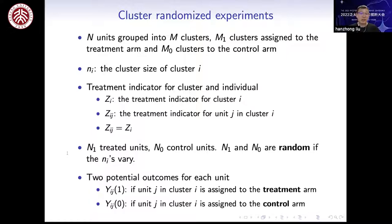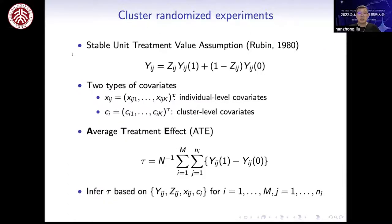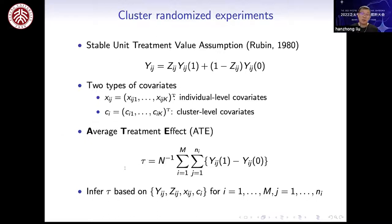For each unit, suppose there are two potential outcomes YZ1 and YZ0 representing its outcome under treatment and under control respectively. We assume that the stable unit treatment value assumption holds, and the observed outcome Yij equals Yij1 if assigned to the treatment group and equals Yiz0 if assigned to the control group. In the experiment we can observe two types of covariates: the individual level and the cluster level. I will use Xij to denote individual-level covariates for unit J in cluster I, and Ci to denote cluster-level covariates. We are interested in the average treatment effect tau and want to infer tau based on the observed data Y, Z, X, and C.